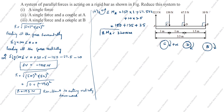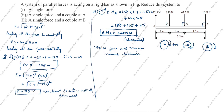ΣMₐ = 320 N·m. This is positive, meaning clockwise. So the answer for part two is: 195 N force and 320 N·m moment clockwise. Now for the third part — a single force and a couple at B. The single resultant force is already calculated. The couple at B means moment, ΣMB.